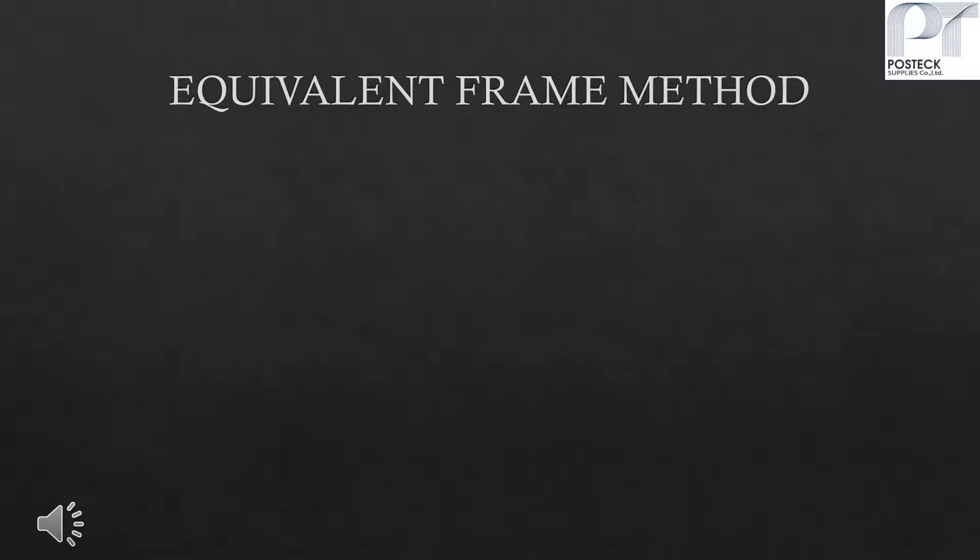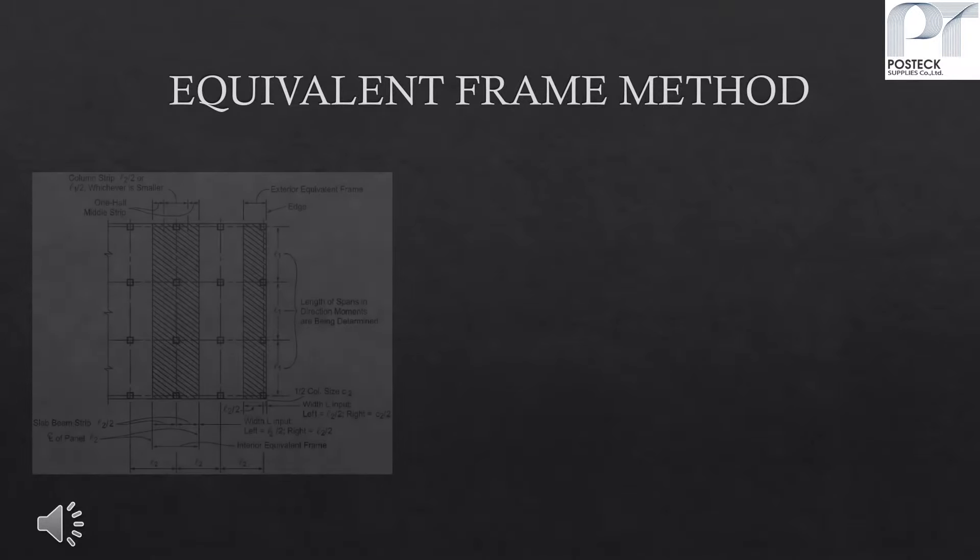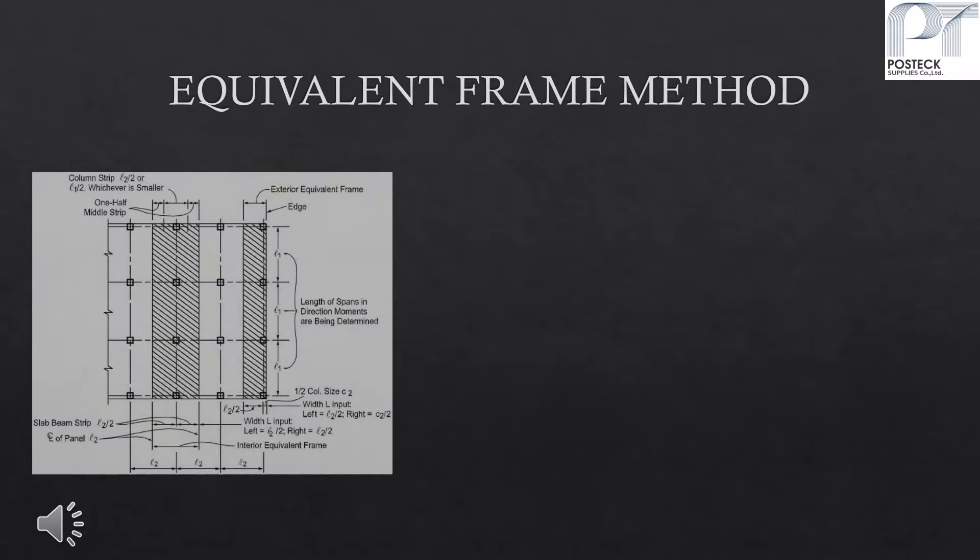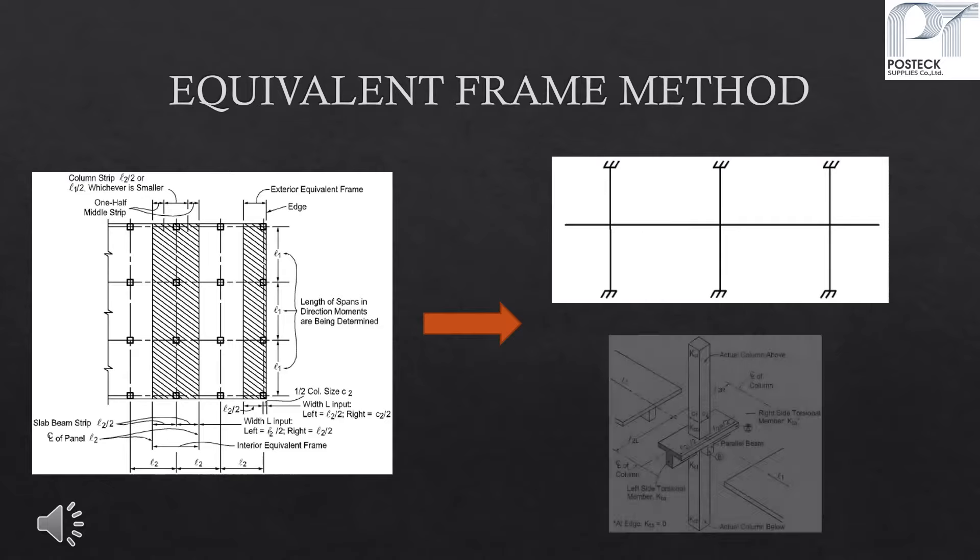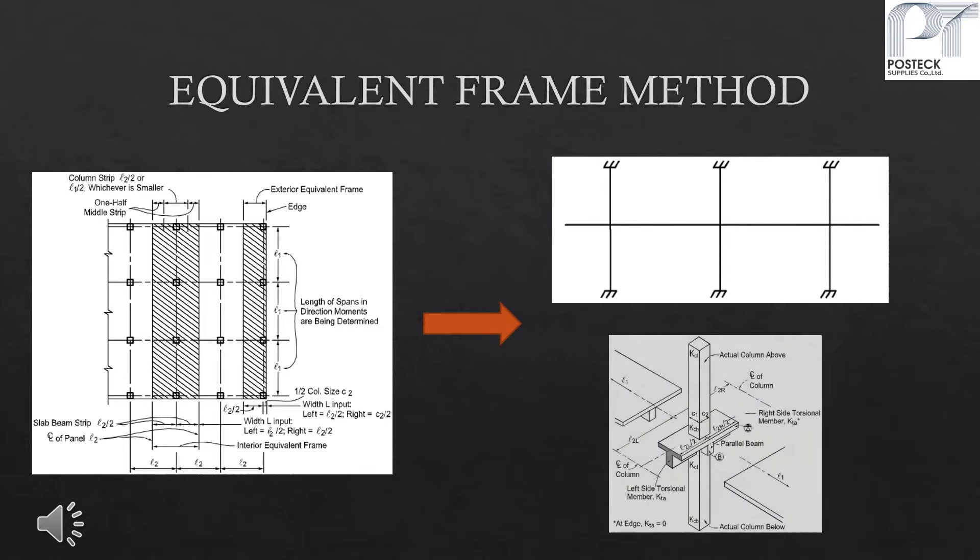By equivalent frame method, we consider two-way slab as one-way equivalent frame system. The equivalent frames are cut from the design strips. For each frame, slab is continuously connected to column through torsional member.